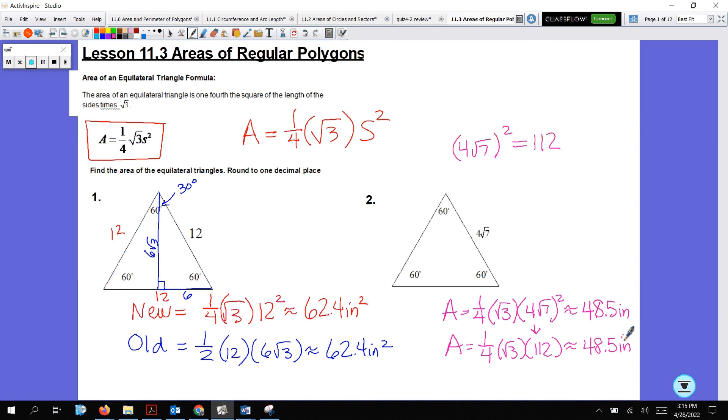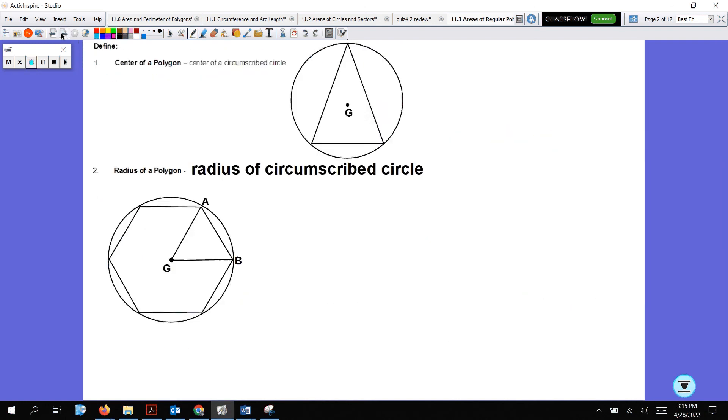Let's do some more investigating. The center of a polygon is the center of a circumscribed circle. Here is the center, center G. That's the center of the polygon, which is also the center of the circumscribed circle. So there's an inscribed polygon there.